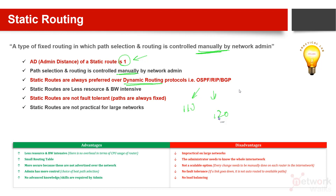Static routes are less resource and bandwidth intensive, which means if we want to configure on a small network or a network with lower-end router models, static routing is best because we don't need much. For example, if we have only two or three routers in a network, it's not practical to use BGP, OSPF, or other routing protocols, so in that case static routing is our best choice.